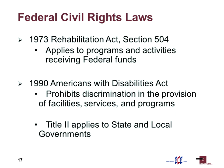Accessibility is a civil right, and there are actually three federal civil rights laws. The Architectural Barriers Act was signed by Congress in 1968 and applied to federal facilities. But the ones we're most concerned about are the 1973 Rehabilitation Act, Section 504, which applies to programs and activities that receive federal funds. And then in 1990, the Americans with Disabilities Act was signed into law, prohibiting discrimination in the provision of facilities, services, and programs. The ADA has several different titles; Title II applies to state and local governments, and that's primarily what we'll be talking about today.